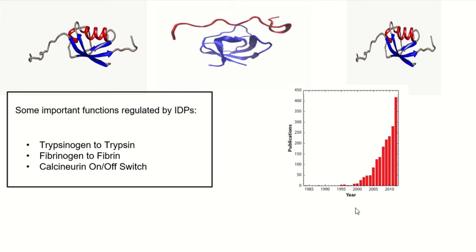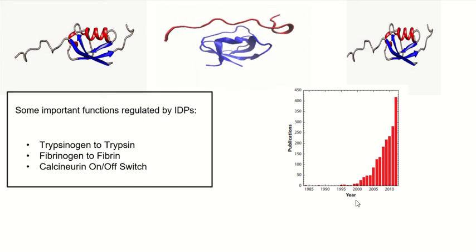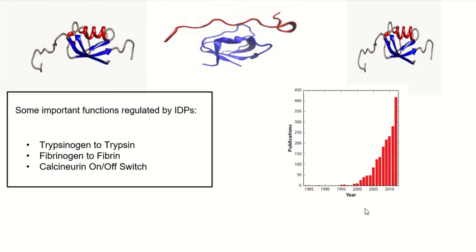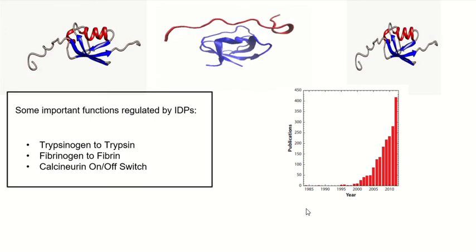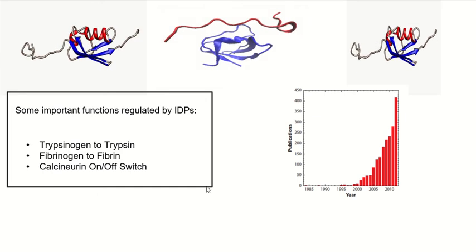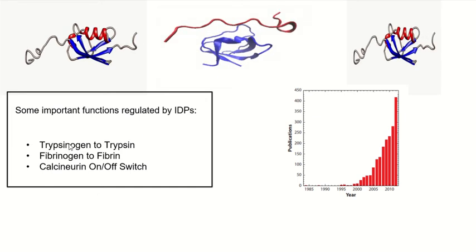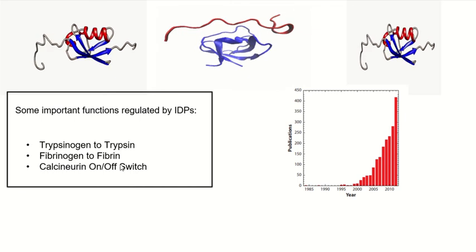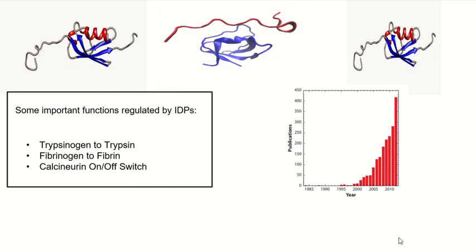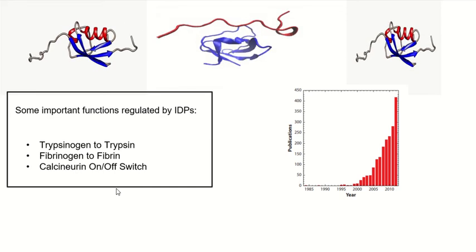It has been observed that IDPs or intrinsically disordered proteins were not much studied until very recently. It was in the late 2000s that people started developing interest in IDPs and right now most of the protein labs are working on these specific regions. Let's quickly discuss some of the important functions. IDPs play an important role in conversion of trypsinogen to trypsin, fibrinogen to fibrin. In calcineurin, IDPs actually act as a switch by helping in the turning on and turning off mechanism.